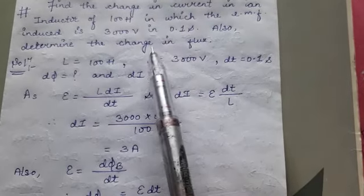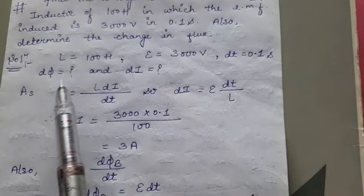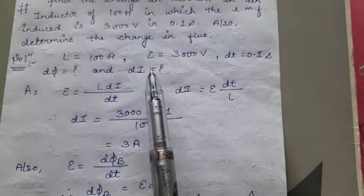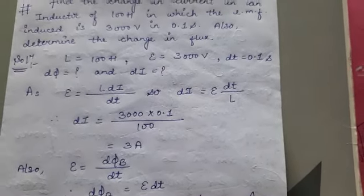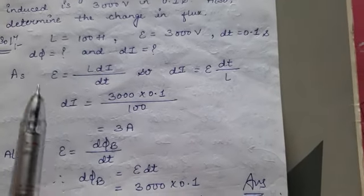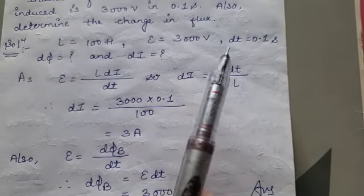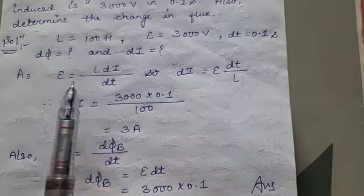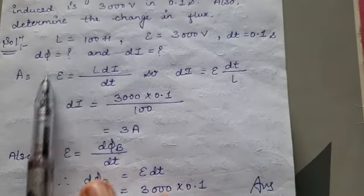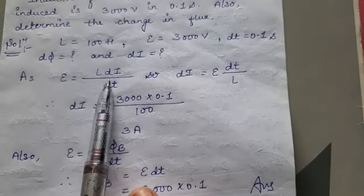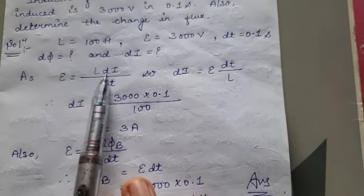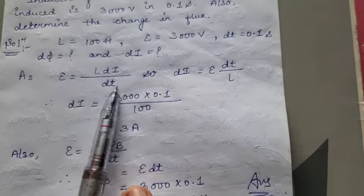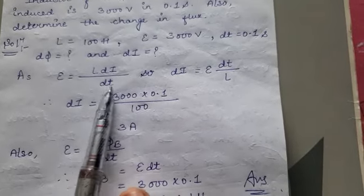We have to find out the change in flux and the current flow. We know that inductance L equals EMF divided by change in current over time, which is L into dI/dt.